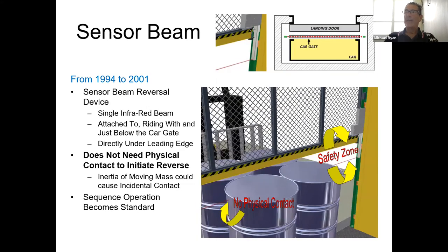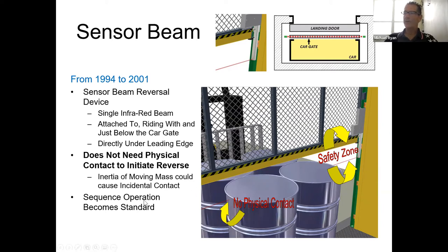In 1994 to 2001, pre-light curtain, Peely designed what's called a sensor beam. One half of the beam slid down from a tube in the gate panel. There was a sender and a receiver, and there was a safety zone of about six inches. This was the first time our car gate would not need to make contact with a person or an object before it reversed. We also decided that sequence operation would be standard at that time.